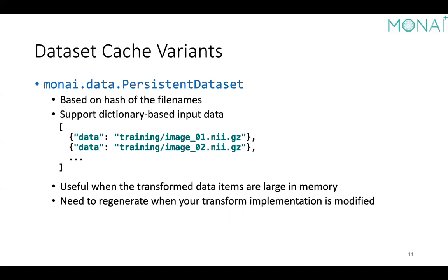Persistent cache is useful when you have relatively large content and don't have enough RAM. Because it stores results persistently, the cache can be shared among different research experiments or even different setups, as long as you use the same preprocessing pipeline. However, if you modify the non-randomized transforms, you need to regenerate the cache — just remove the previous cache files or specify another location when creating a new dataset instance.